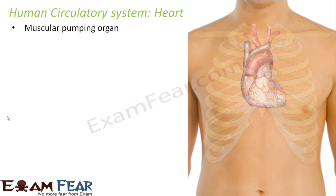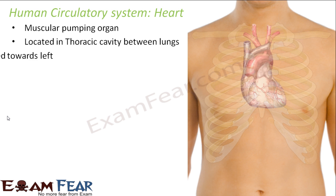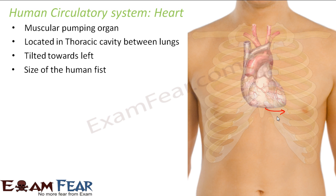The heart is a muscular pumping organ located in the thoracic cavity between the lungs. There are two lungs in the thoracic cavity, and somewhere in the middle is the heart, which is slightly tilted towards the left. The size of the heart is approximately the size of a human fist, and its weight is around 300 grams.